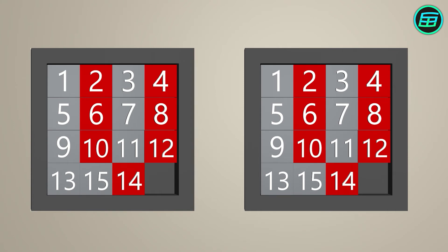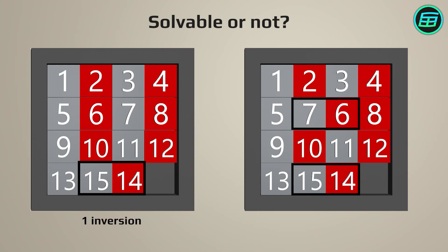Given a random arrangement of tiles, can we know in advance if we have one of the unsolvable kind? Yes, very easily. Simply count how many instances there are of a tile numbered n appearing after the tile numbered n plus 1. If there are an even number of such inversions, the puzzle is solvable. Otherwise,